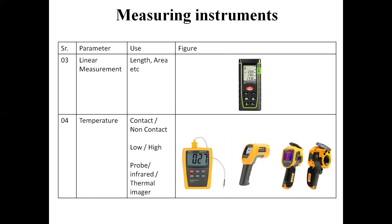For temperature measurement, there is a contact type, a non-contact type, a probe type, an infrared type, and a thermal imager type. The first is the contact-type low-temperature probe — you can directly place the probe on the surface of the instrument to get the temperature. This instrument is used where the temperature is not more than about 200–250 degrees Celsius. It is dangerous to use a contact-type instrument at temperatures exceeding 300 degrees.